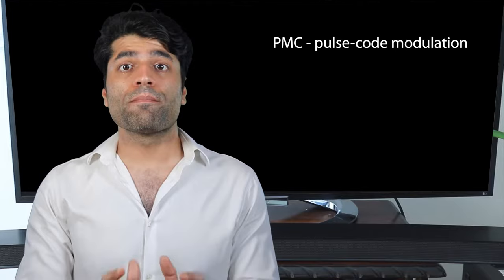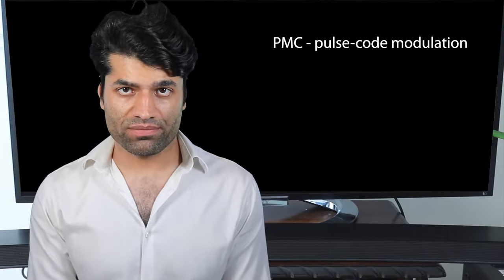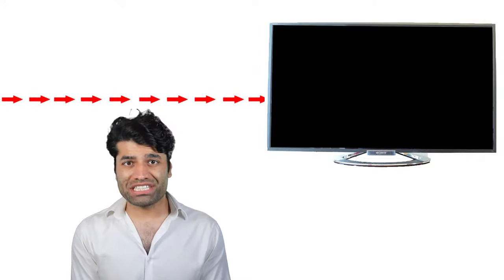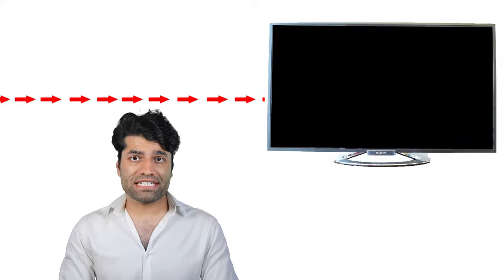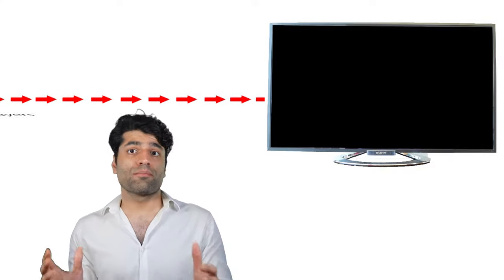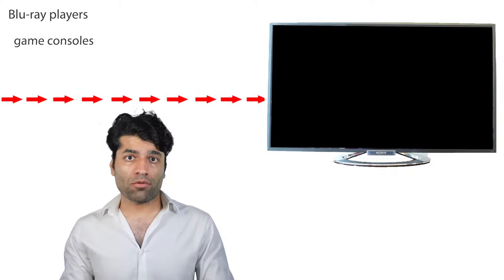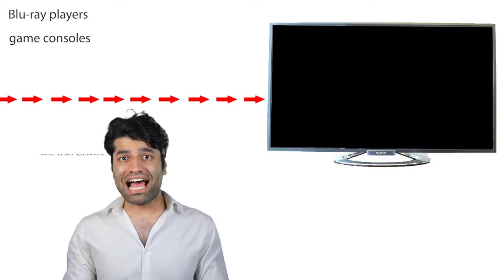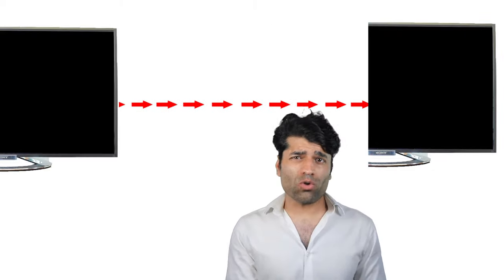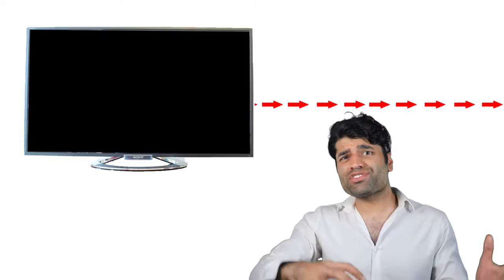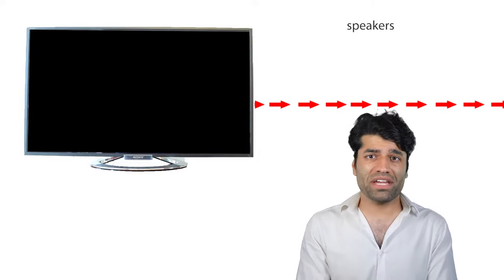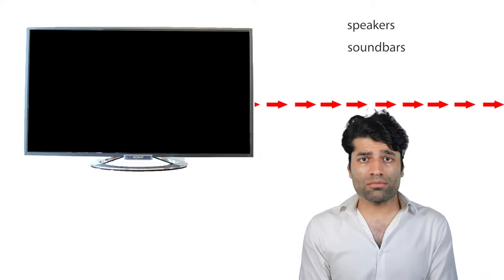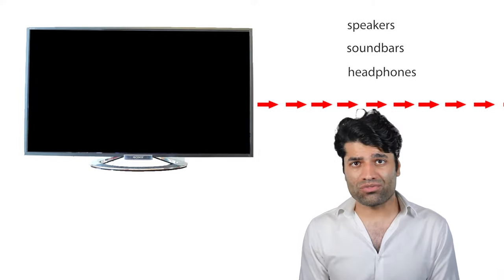PCM stands for Pulse Code Modulation. The TV could be receiving audio signals from input devices such as Blu-ray players, game consoles, and set-top boxes, or it could be sending audio signals to output devices such as speakers, soundbars, and headphones.